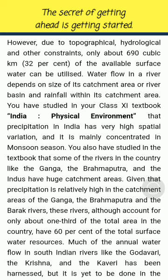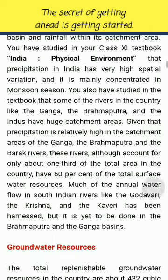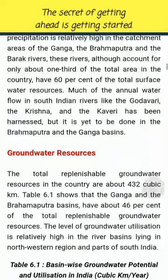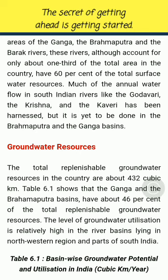Water flow in a river depends on the size of its catchment area or river basin and rainfall within its catchment area. Precipitation in India has very high spatial variation and it is mainly concentrated in the monsoon season. Rivers like the Ganga, the Brahmaputra and the Indus have huge catchment areas. Given that precipitation is relatively high in the catchment areas of the Ganga, the Brahmaputra and the Barak rivers, these rivers, although accounting for only about one-third of the total area in the country, have 60% of the total surface water resources. Much of the annual water flow in South Indian rivers like the Godavari, the Krishna and the Kaveri has been harnessed, but it is yet to be done in the Brahmaputra and the Ganga basins.